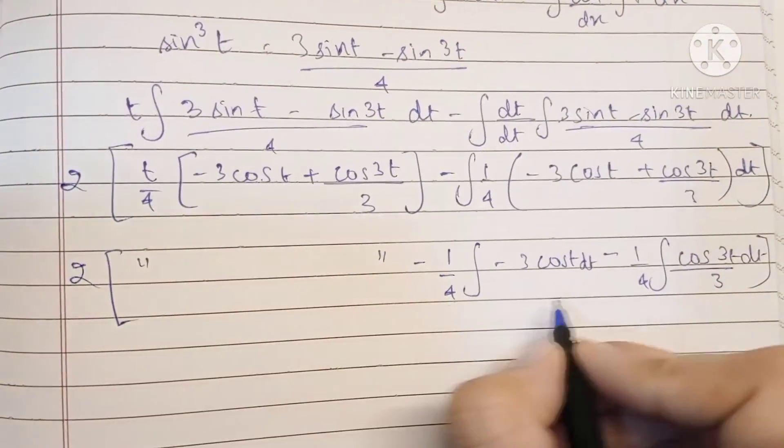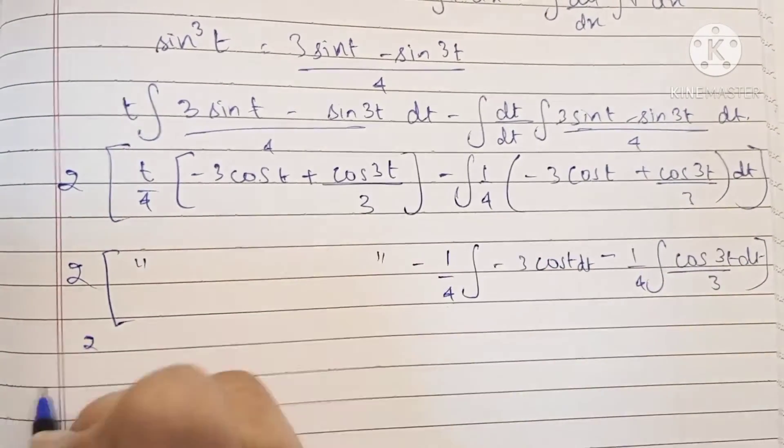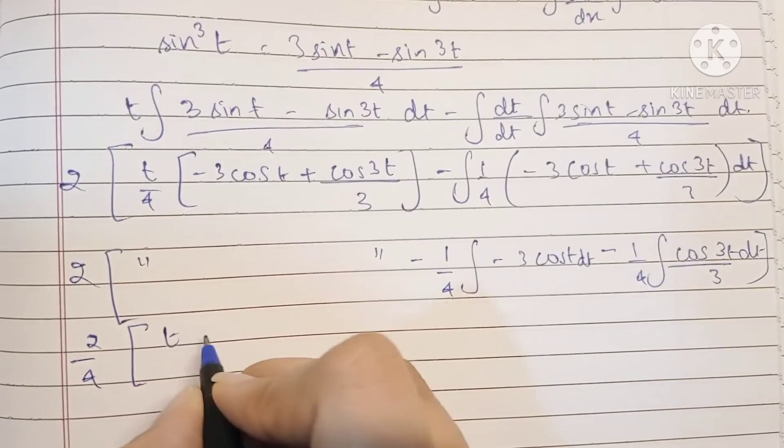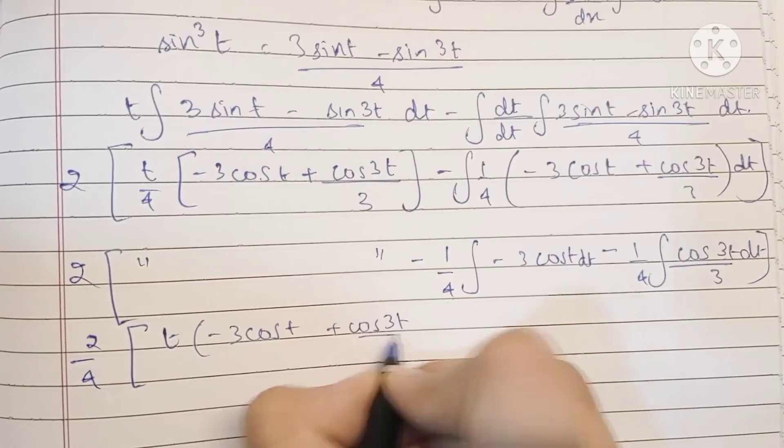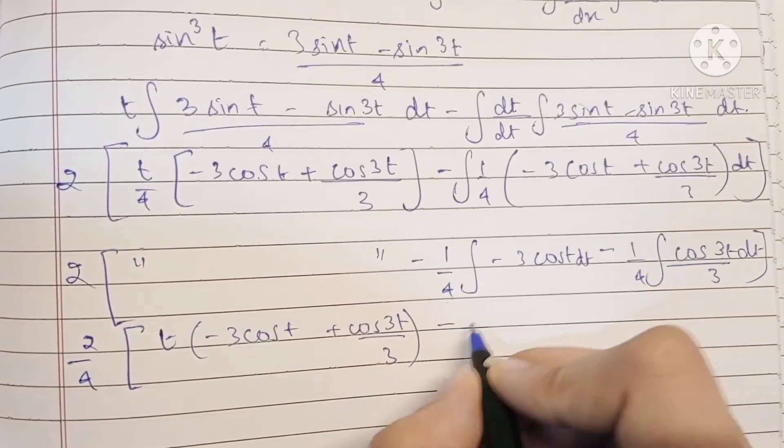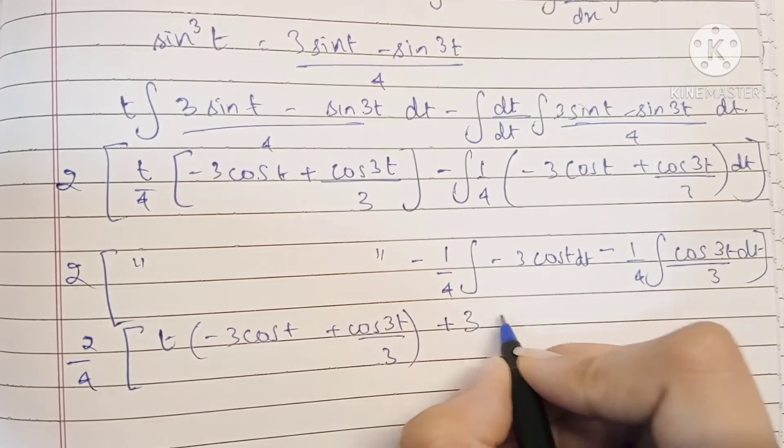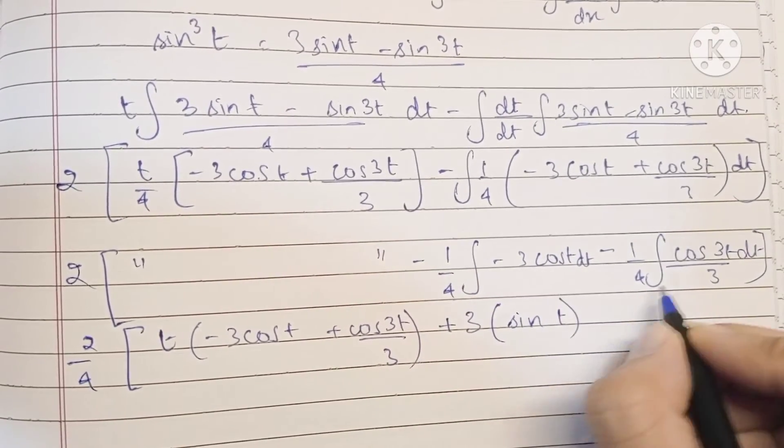So now we can just take 1 by 4 outside because it's part of every term of the integral. This becomes 2 by 4, so this becomes t minus 3 cos t plus cos 3t by 3. Minus minus minus becomes plus, I'm just taking this minus outside, plus 3.